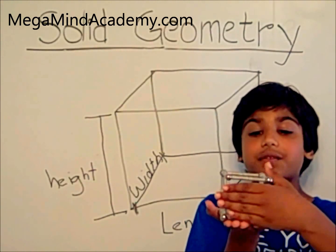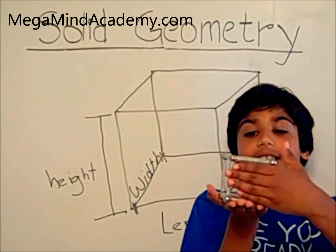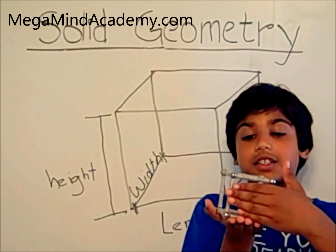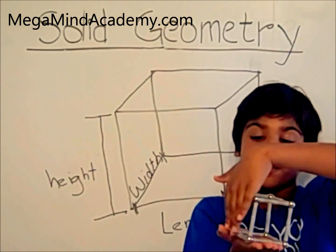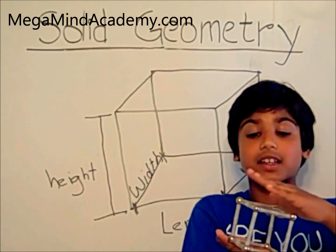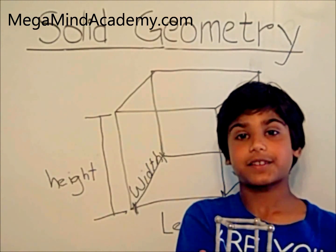And the second one, surface area, is the area of each surface. There are four surface areas, and two top and bottom surface areas.